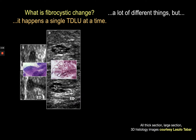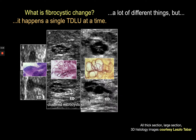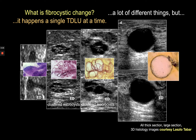In fibrocystic change, the acini begin to become cystically dilated and the walls between them eventually efface. In the long axis view, we can see seven or eight cystically dilated acini, an Extralobular Terminal Duct, and an Intralobular Terminal Duct. The normally loose gray intralobular stromal fibrous tissue has become white — the 'fibro' part of fibrocystic change. As the degree of fibrocystic change increases, the number of acini decreases and they become larger, eventually forming a simple tension cyst, usually due to twisting of the Extralobular Terminal Duct.